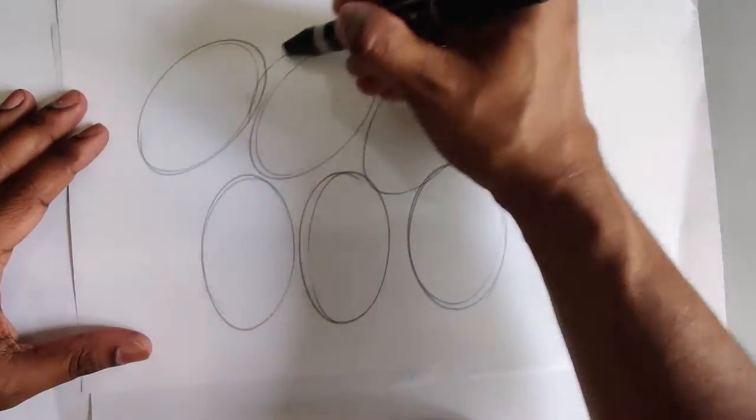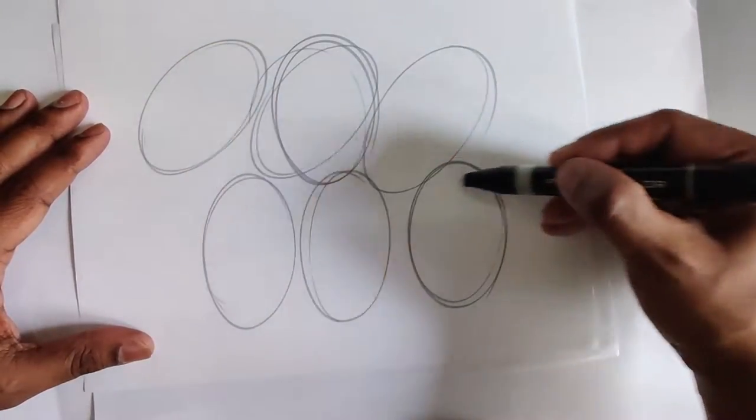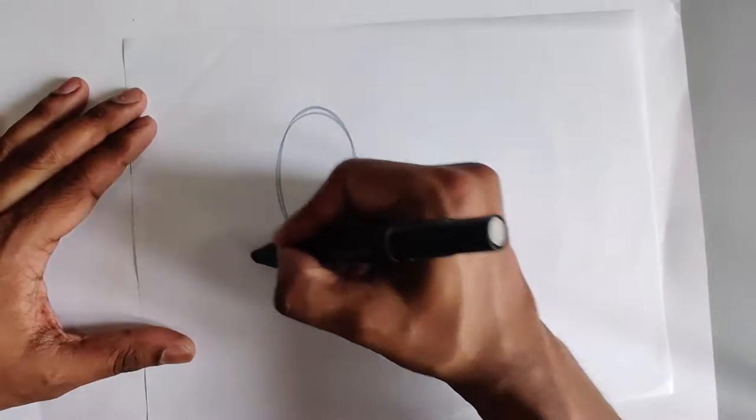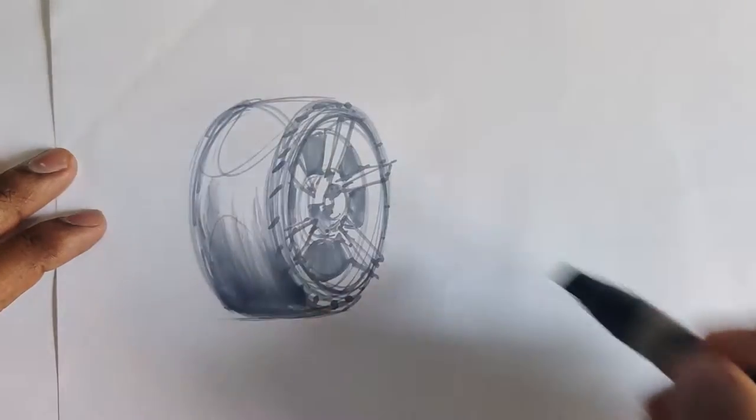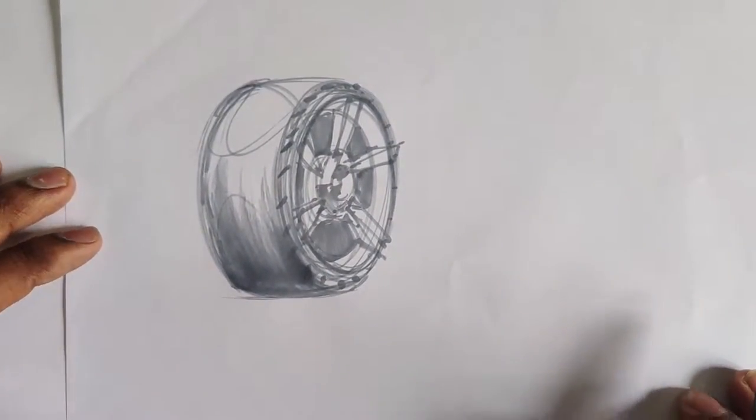Hey, what's up? Arvind here. Today we're going to be taking ellipses and we're going to transform that into, voila, a tire. Let's get started.